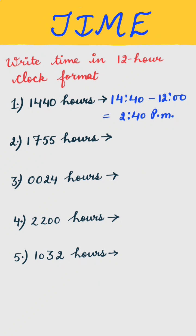Next is 1755 hours. We can write it as 1755 minus 12. This is equal to 5:55 PM.